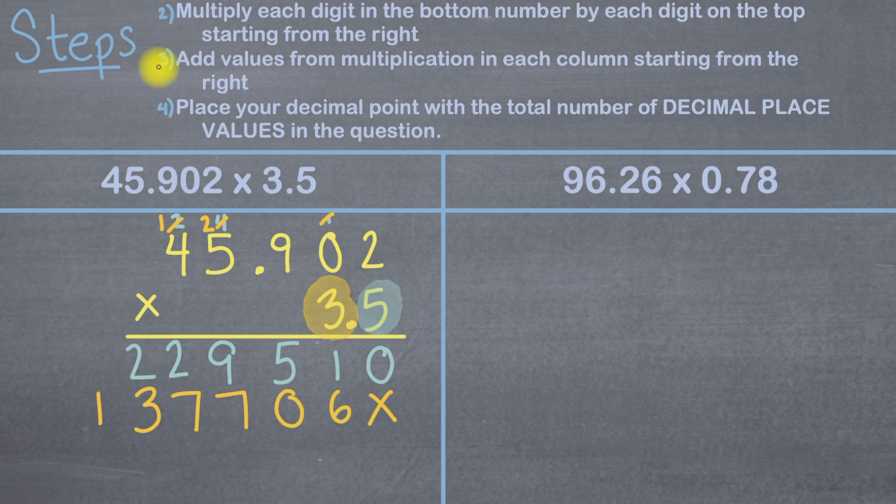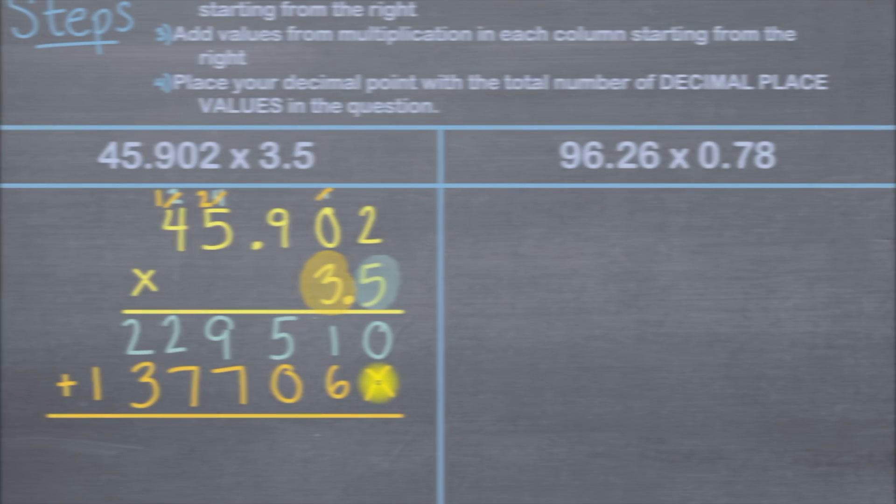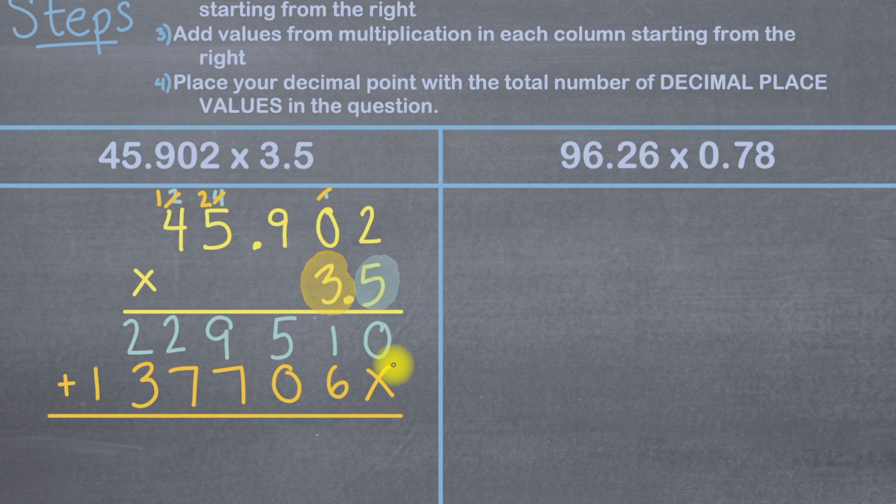Now we can move on to step three and that says to add values from multiplication in each column starting from the right. So I'm going to put a plus sign here and then underline everything. I'll scroll up a little bit and now we'll start adding column by column starting from the right. 0 plus nothing is 0. 1 plus 6 is 7. 5 plus 0 is 5.